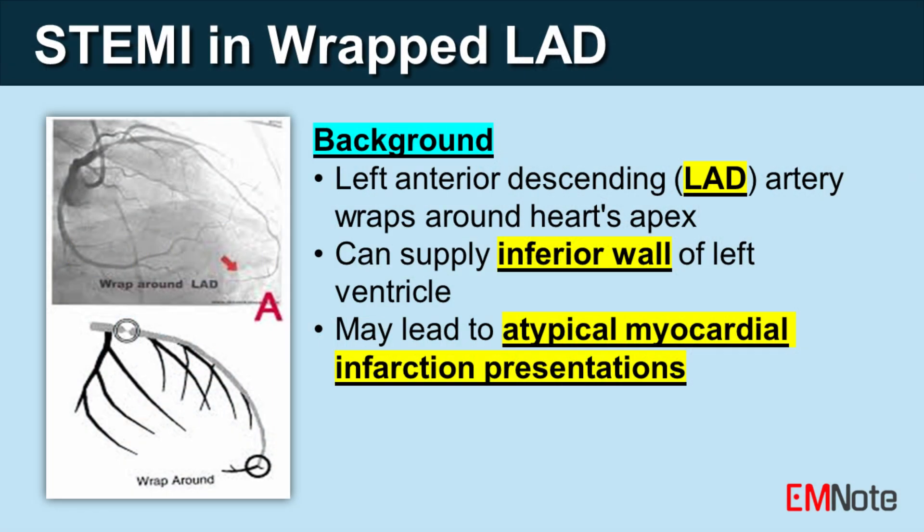A wrapped left anterior descending artery (LAD) is an anatomical variant where the LAD wraps around the heart's apex and can supply the inferior wall of the left ventricle, potentially leading to atypical presentations of myocardial infarction.